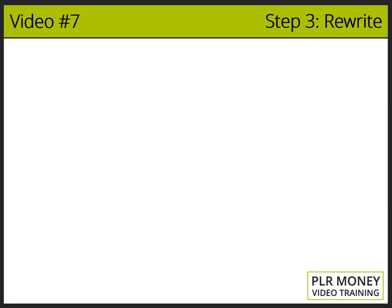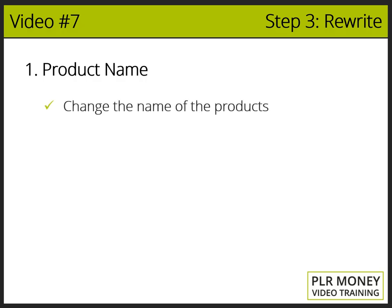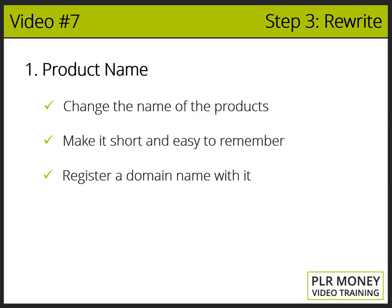Product name: change the name of the product, especially the first product you will use as a freebie for the squeeze page, as well as the name of the main product. Try to make it short and easy to remember so you can easily register a domain name with it. Other people have had access to the same PLR product — many will leave the same name, and those products may be listed for sale for a dollar, which is not honest. But if you change the name, that will make you unique.